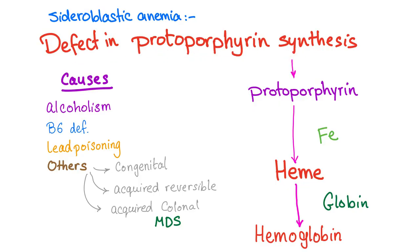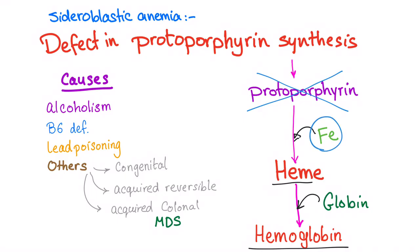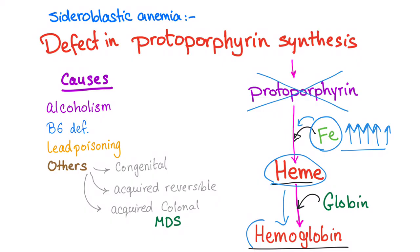Sideroblastic anemia is a defect in protoporphyrin synthesis, which is part of heme synthesis. When protoporphyrin forms, it combines with iron to form heme, and heme combines with globin to form hemoglobin. However, in sideroblastic anemia there is no protoporphyrin. This iron has nothing to combine with, so it will accumulate and back up, giving a picture very close to hemochromatosis or any iron overload condition. I will not be able to form hemoglobin — hence, anemia, which is low hemoglobin and low hematocrit.